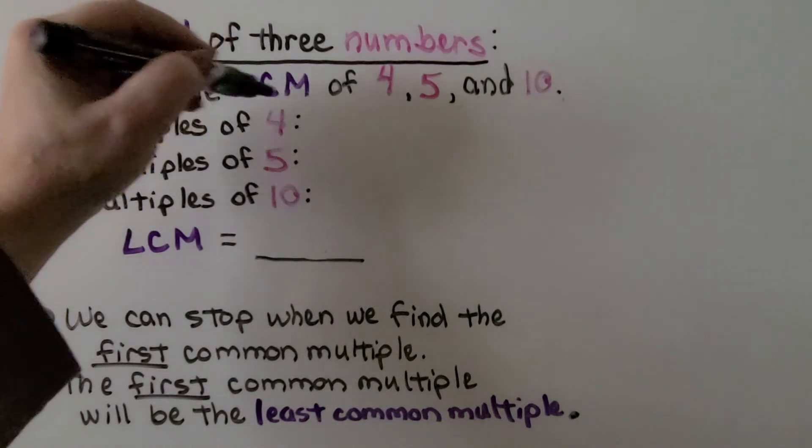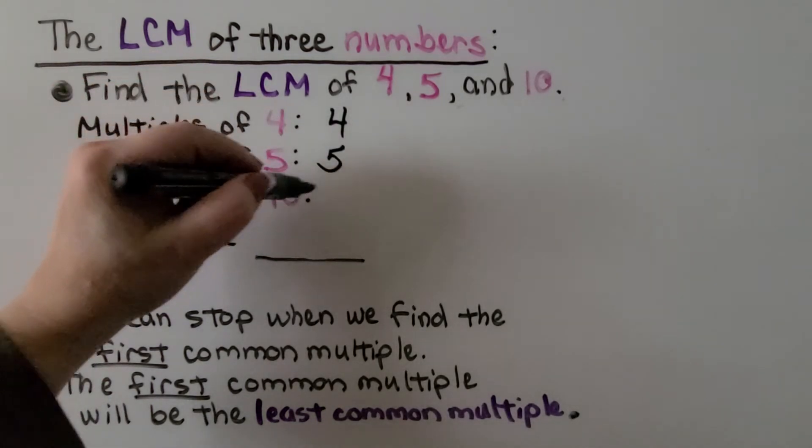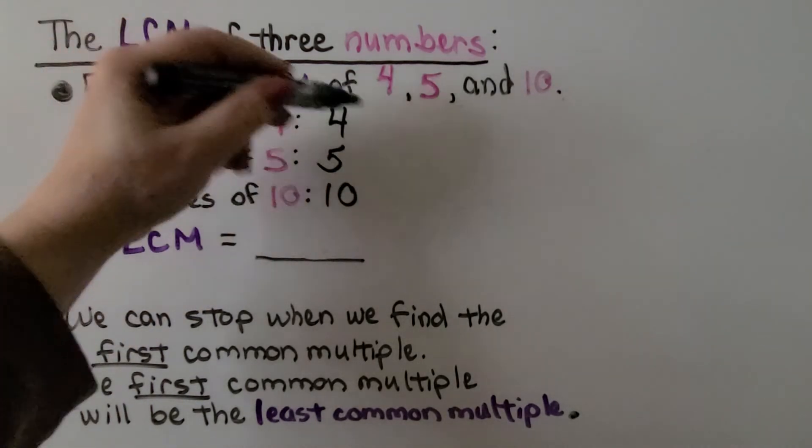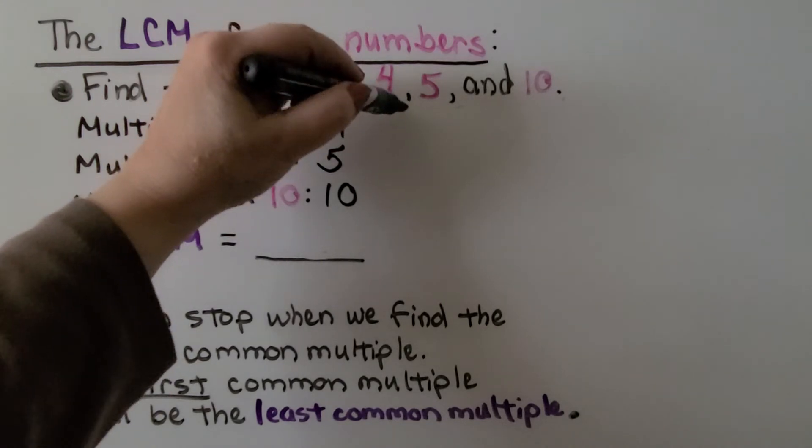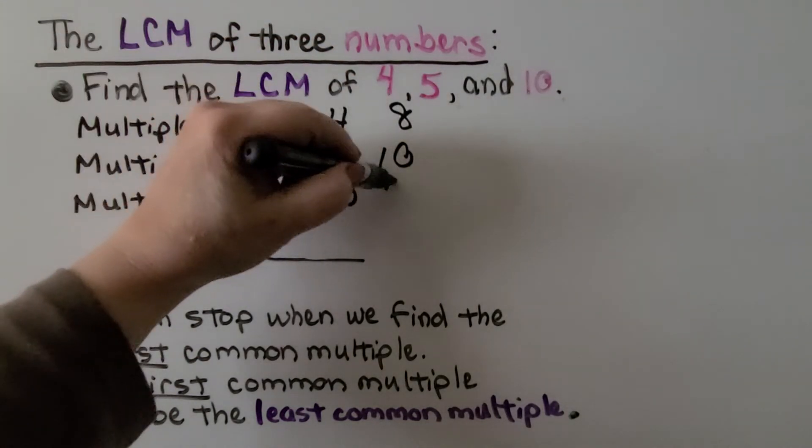The first common multiple will be the least common multiple. So we can do 4 times 1 is 4. 5 times 1 is 5. 10 times 1 is 10. Then we can do times 2. 4 times 2 is 8. 5 times 2 is 10. 10 times 2 is 20.